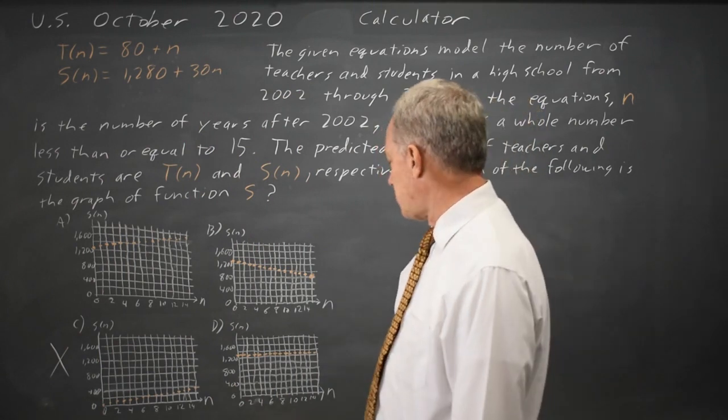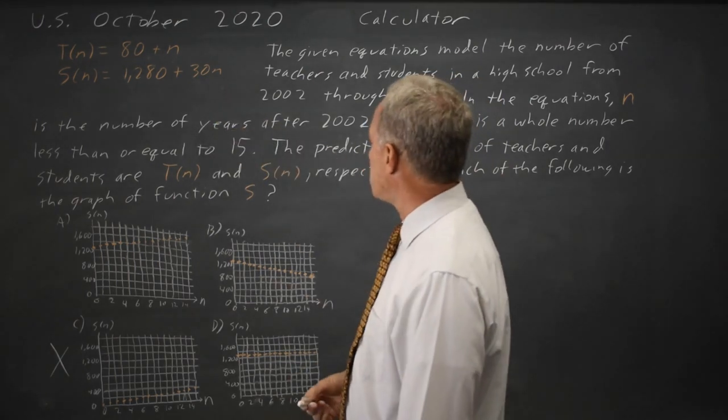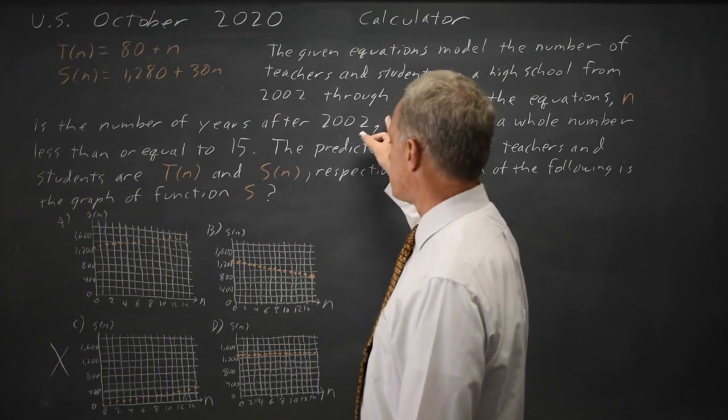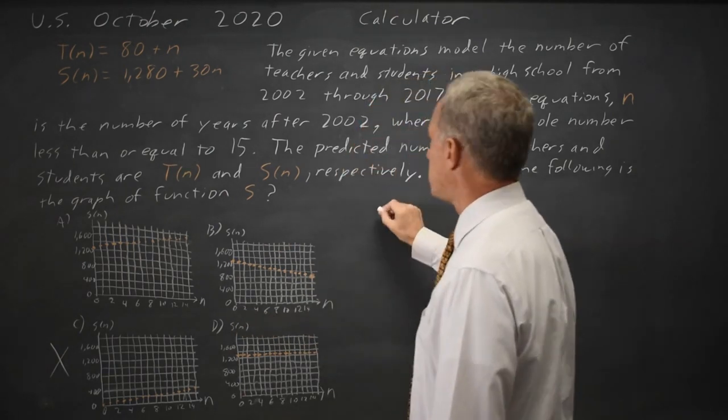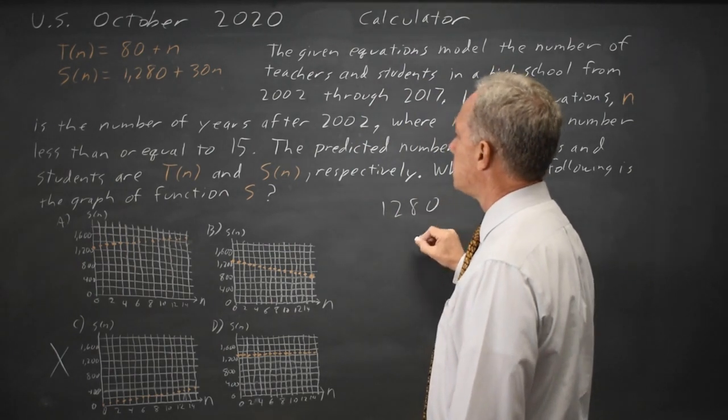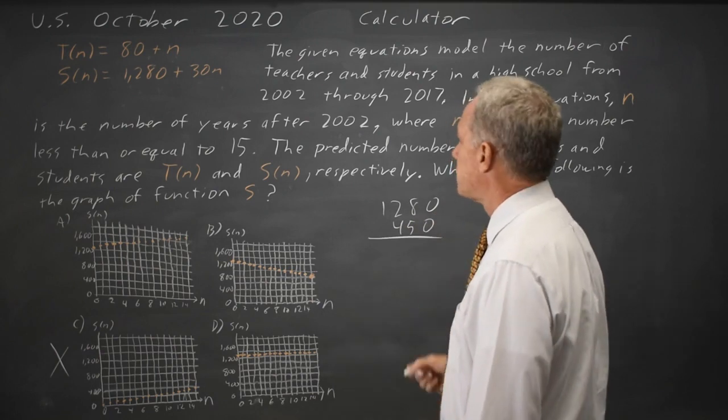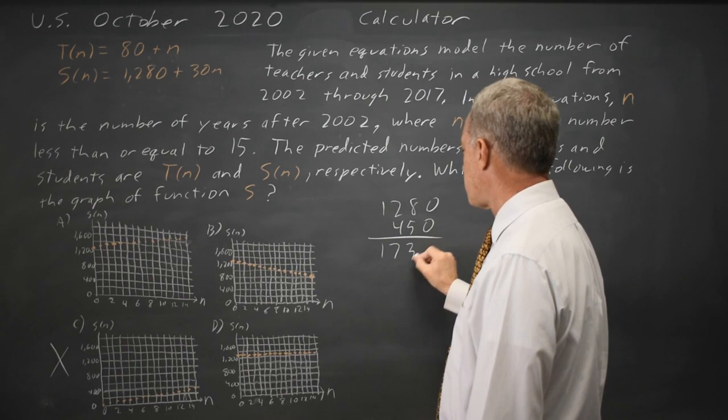Let's look at which other options we can eliminate. For n equals 15, which is the last year, this applies in the last year on each of these graphs. We should have 1280 plus 30 times 15, which is plus 450. We can do this on a calculator but we don't need to. And that would be 1730.